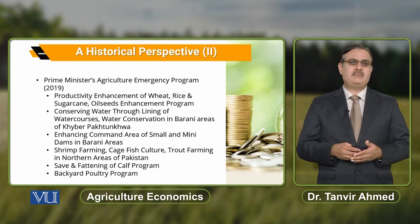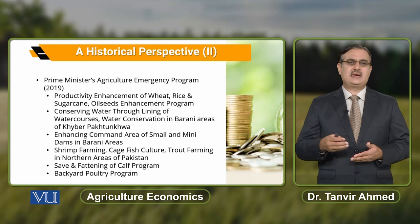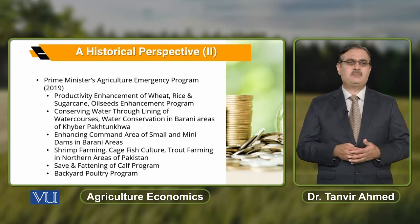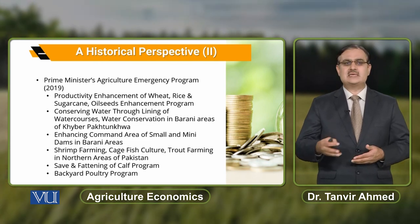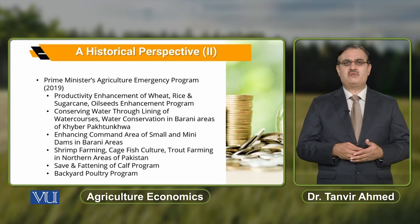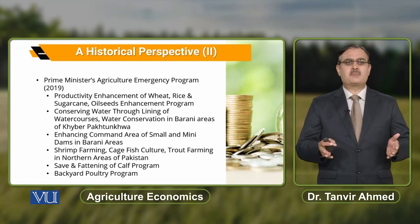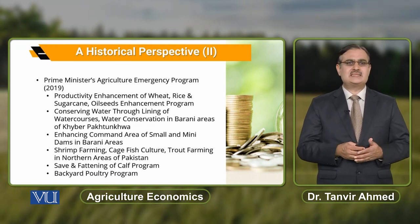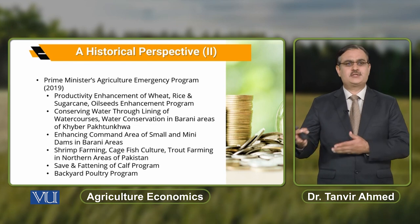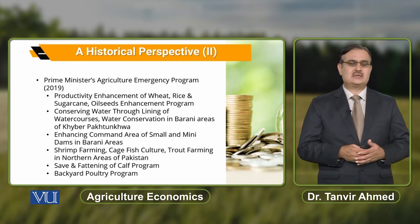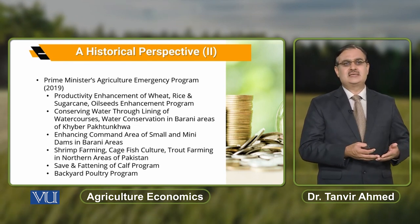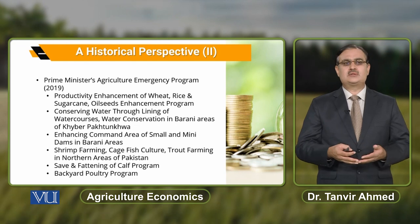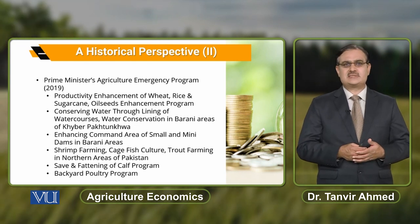In the recent past, in 2019, there was a Prime Minister's Agriculture Emergency Program. The objective was to enhance the productivity of wheat, rice, and sugar cane. This also aimed to enhance water conservation through the lining of water courses.